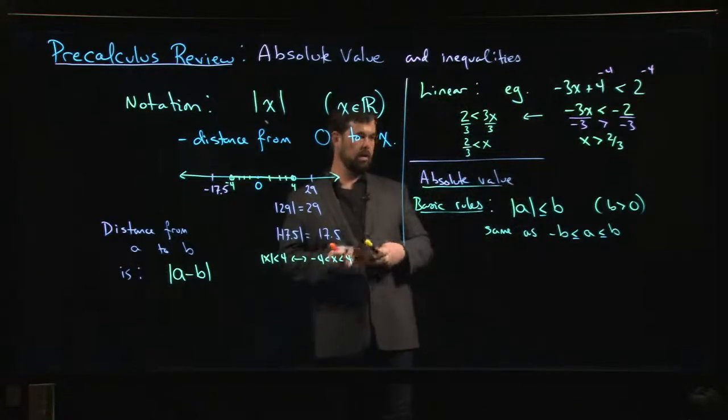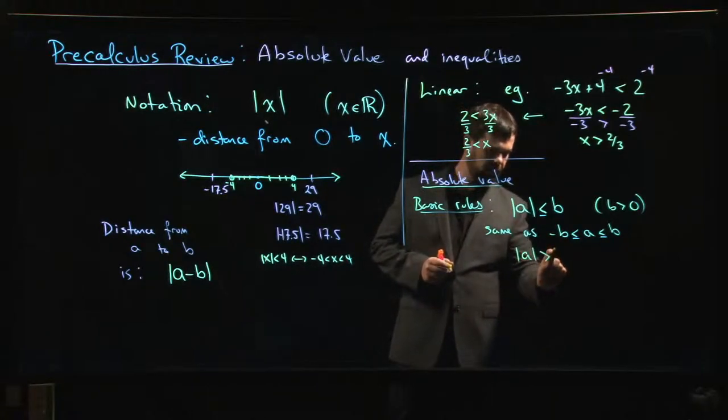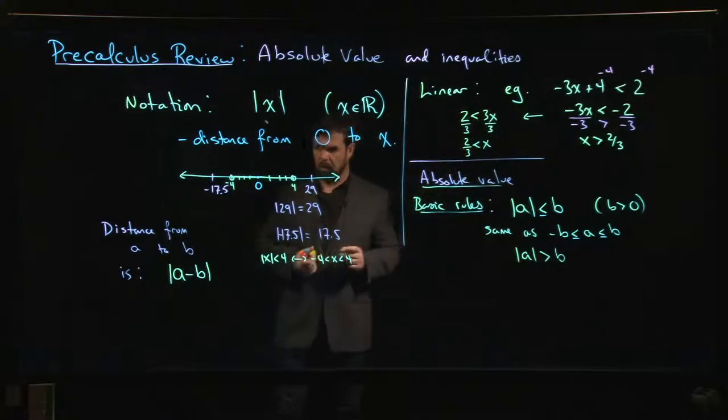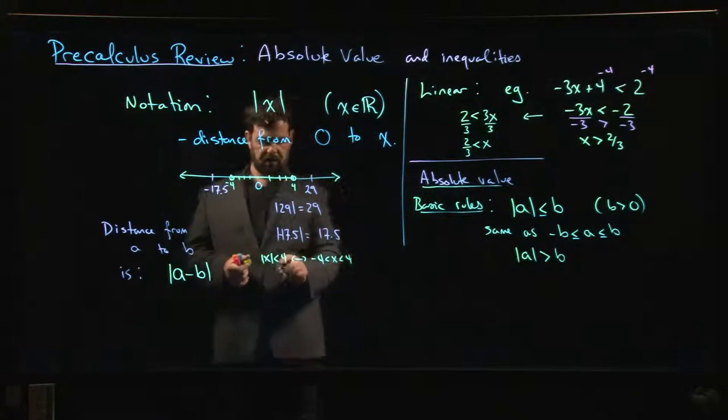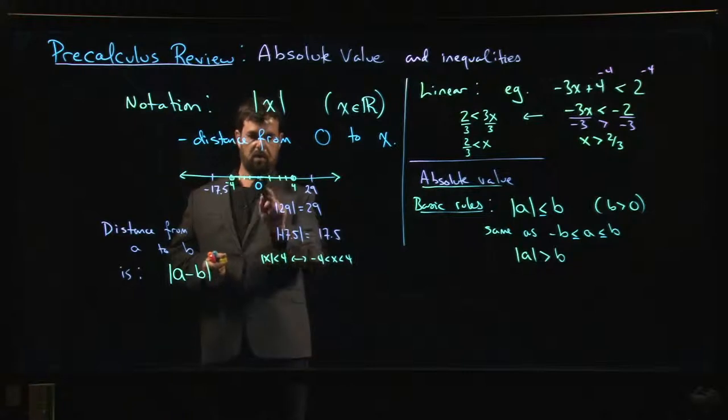The other one is, well, what if it's the other way around? What if we have absolute value of a bigger than b? What does that mean? Well, that means, let's come back to this example. What if I turned it around and said, I want all the values of x where the absolute value is bigger than 4?